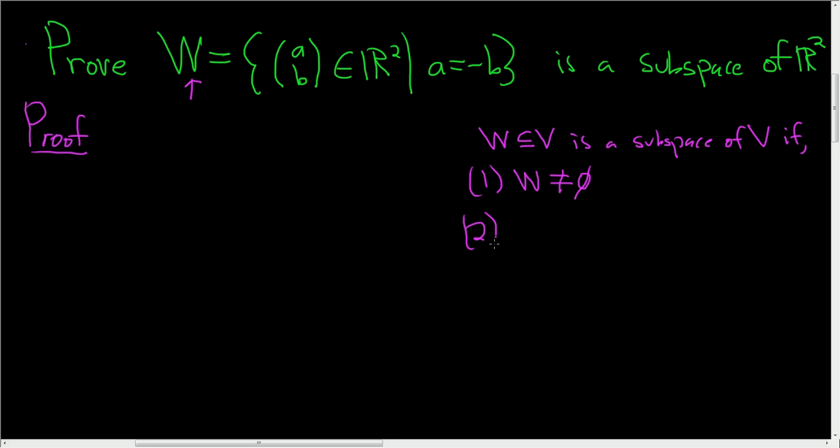Two, the second condition is that W should be closed under vector addition. In other words, given any two vectors X and Y in W, their sum must also reside inside W. So X plus Y also needs to be an element of W.